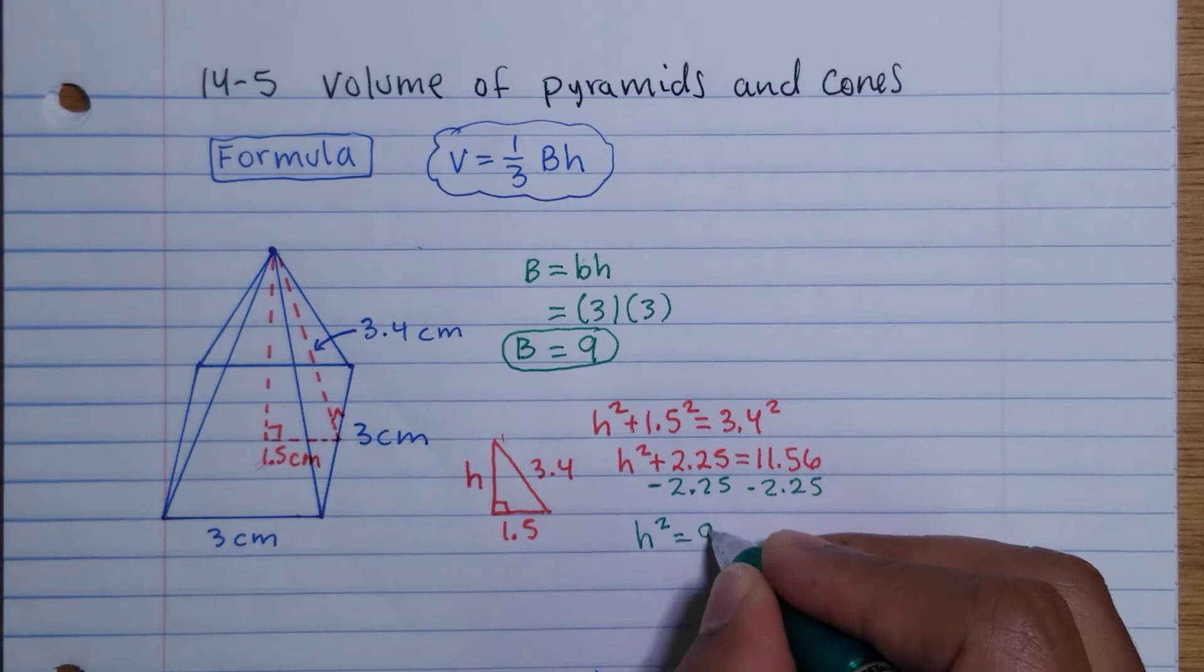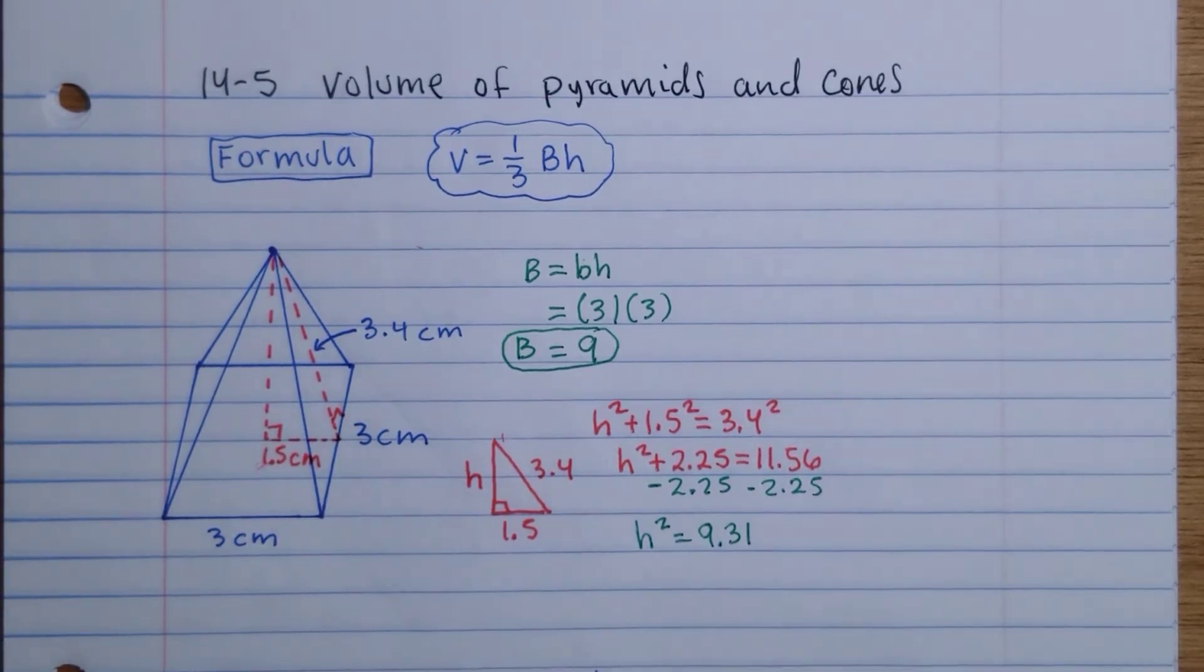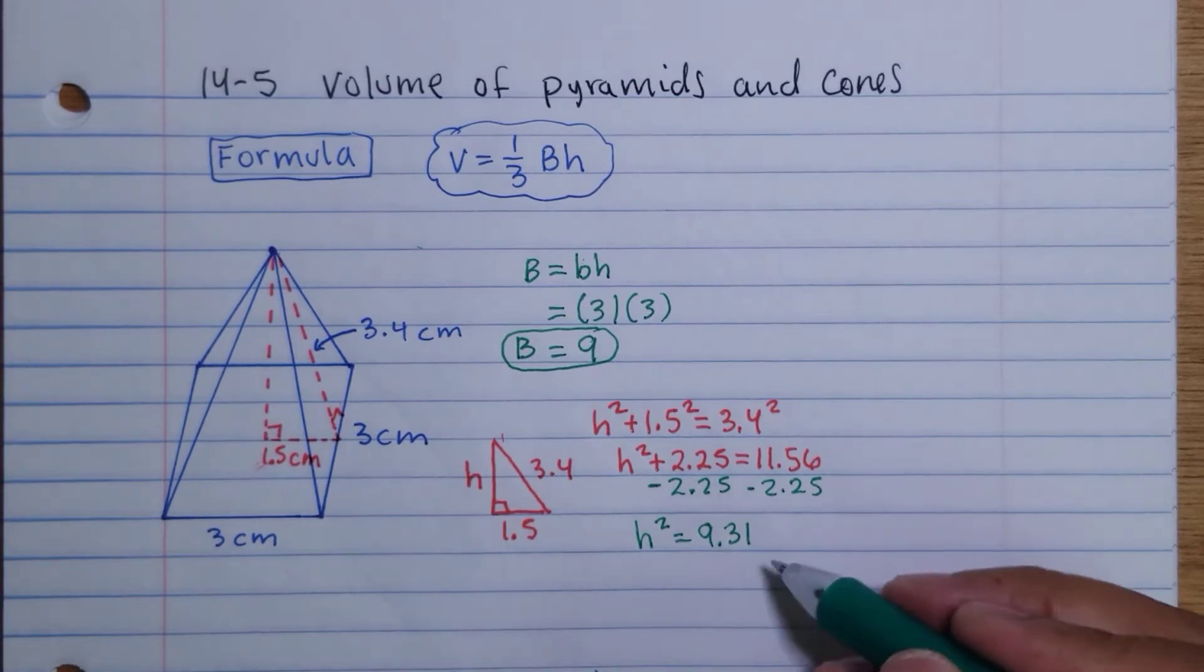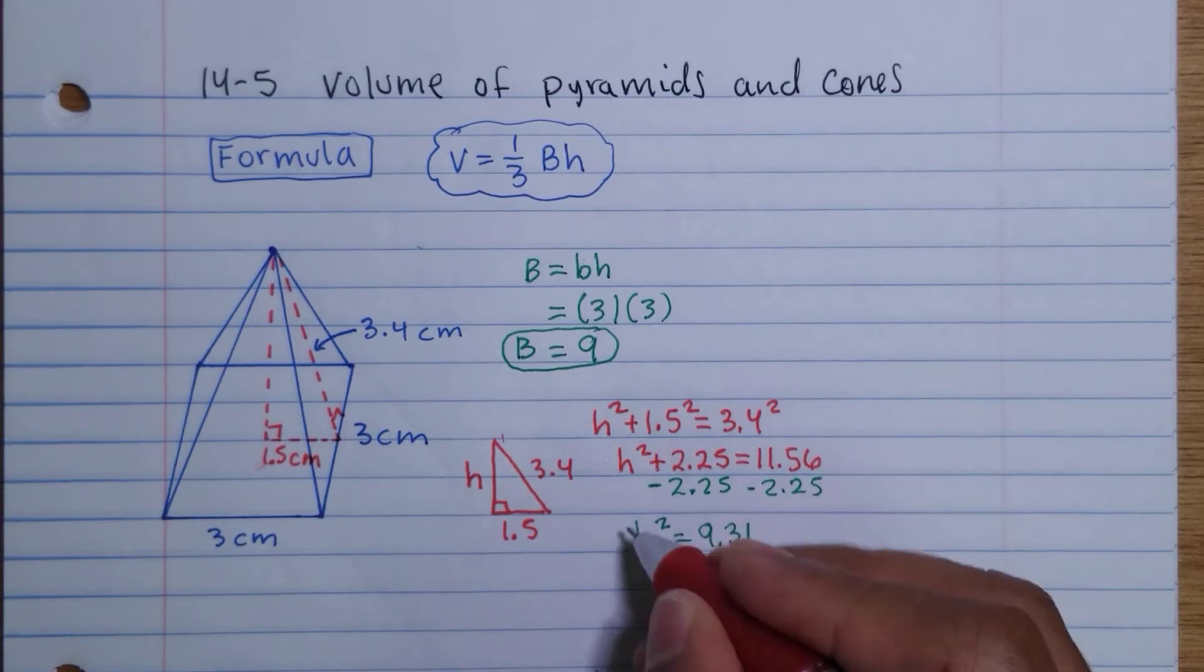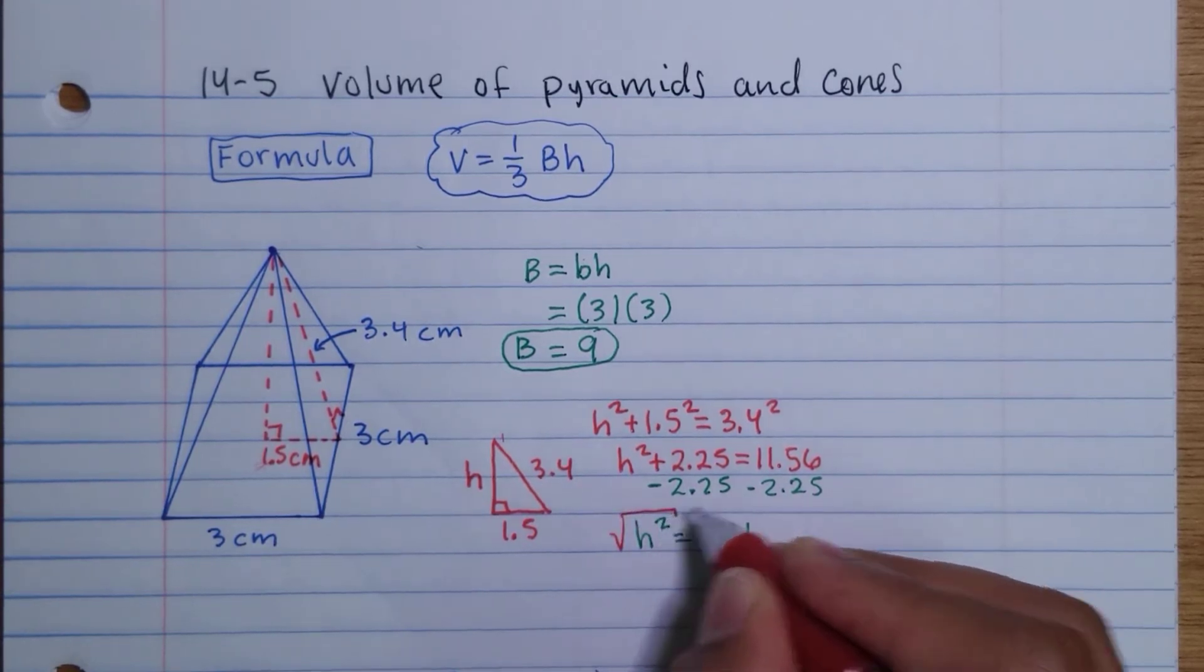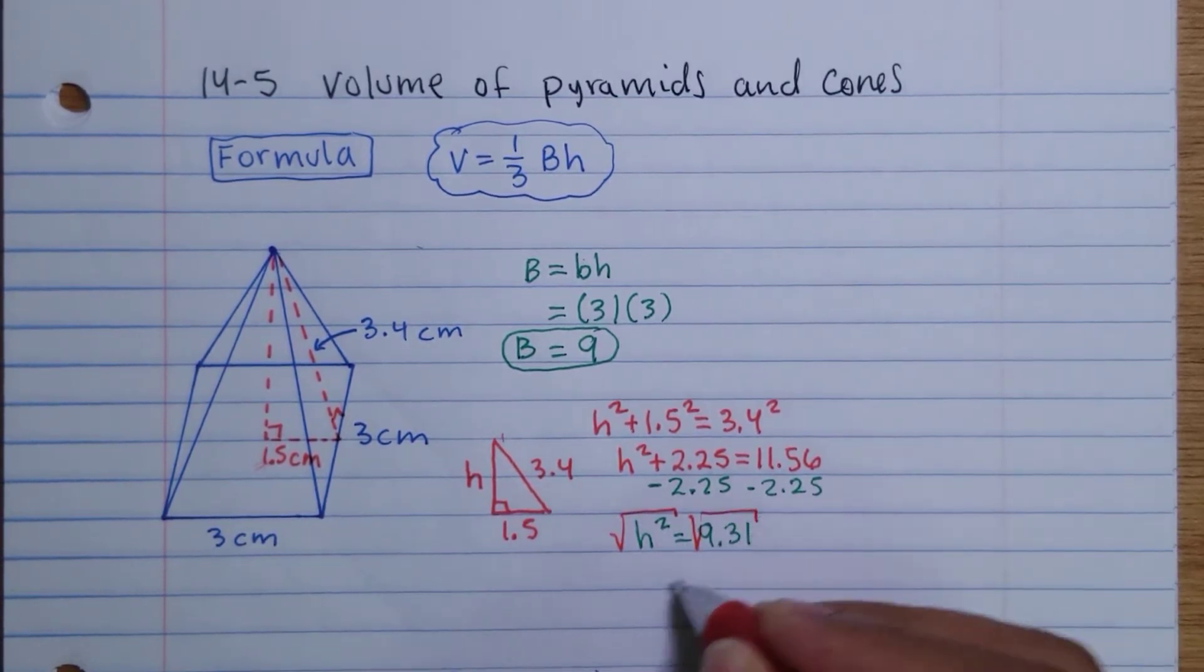Don't forget this is the square, so we take the inverse of the square, which is we take the square root of both sides of the equation. So then we find that H equals, and I'm going to leave it like this for now, the square root of 9.31. So now we have the height and we have the base.